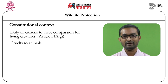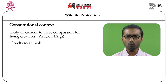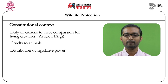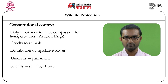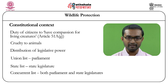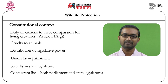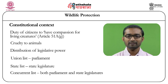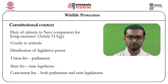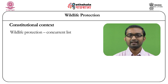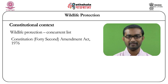Another provision relevant to wildlife is who has the power to enact laws on wildlife protection. The constitution divides legislative power between parliament and state legislatures through three lists: the Union List, the State List, and the Concurrent List. Parliament has exclusive power over Union List subjects; state legislatures have exclusive power over State List subjects; and both have equal power over Concurrent List subjects. Originally, the constitution had included wildlife in the State List, but this was changed in 1976 through the Constitution 42nd Amendment Act, which moved wildlife to the Concurrent List. Now both parliament and state legislatures can enact laws on wildlife protection.